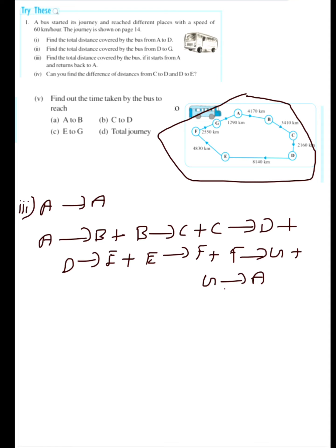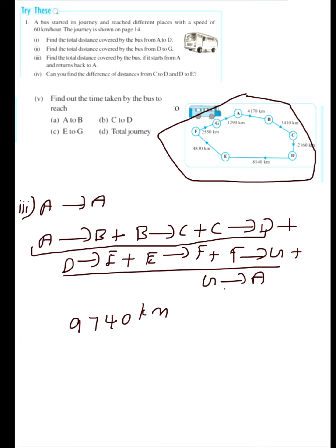The distance A to B plus B to C plus C to D we have already found in the first question: 9740 km. And from D to G we found in the second question: 15,520 km. The only thing remaining is G to A, which is 1290 km.